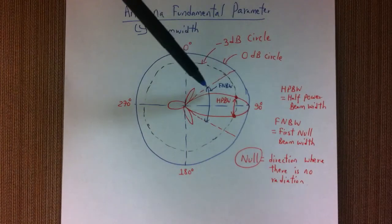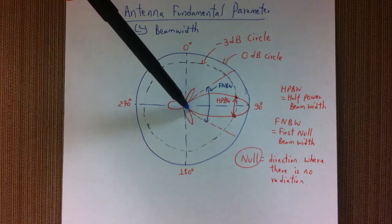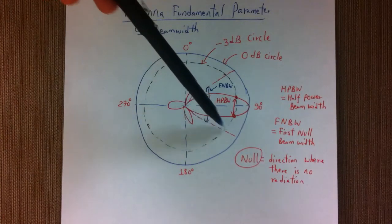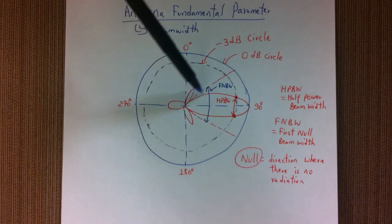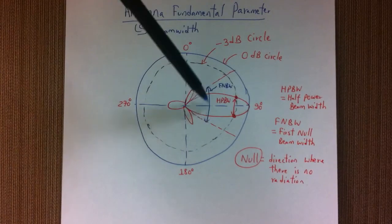For the first null beam width, you basically have to find where there are no radiation points. So there is no radiation along this direction and there is no radiation along this, so from this distance to that distance is your first null beam width.